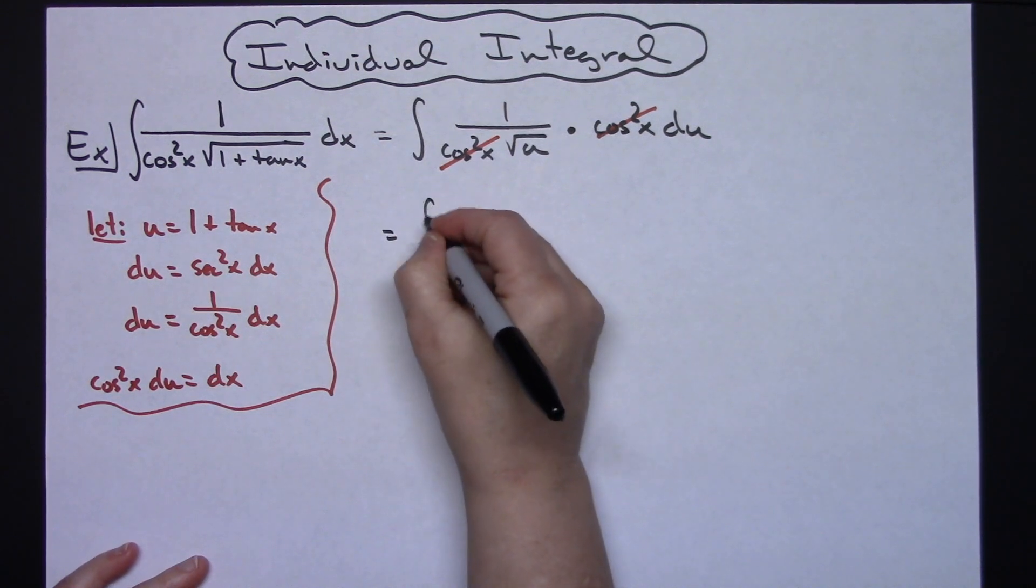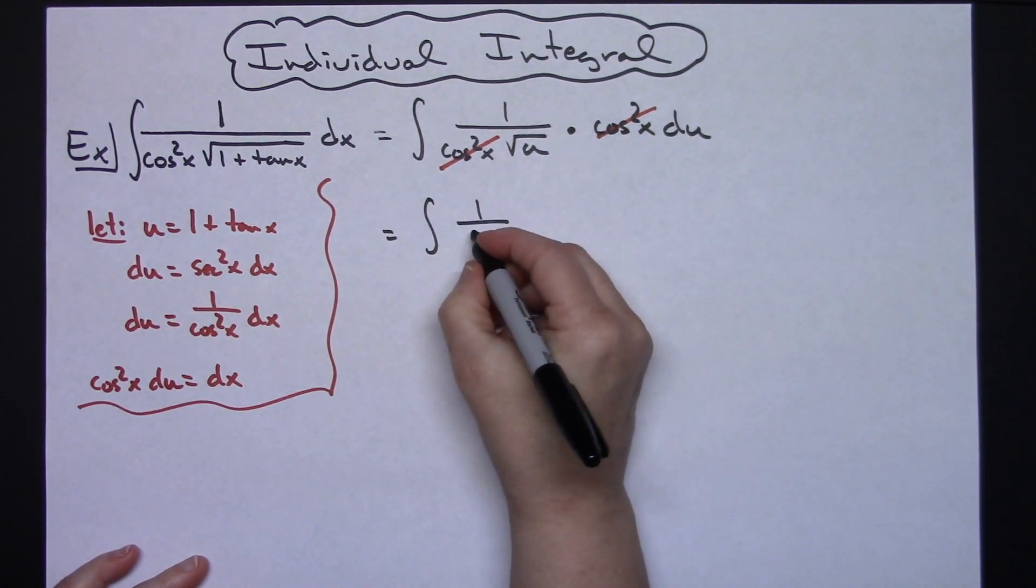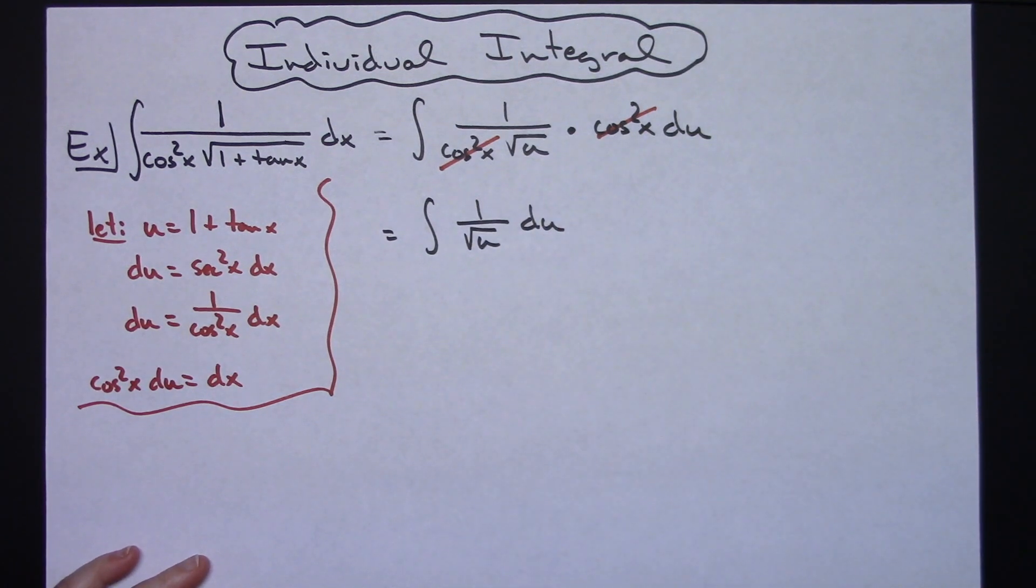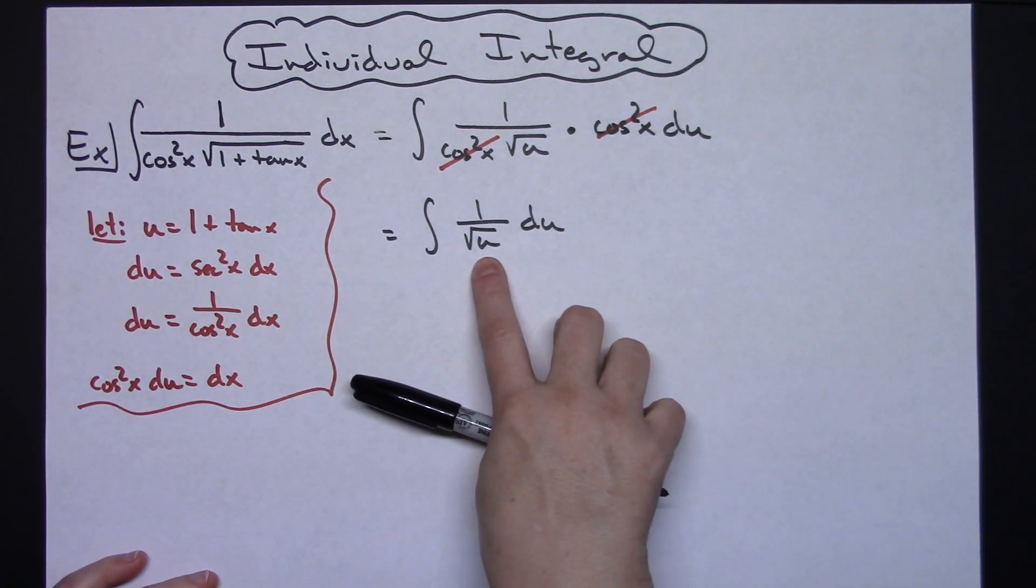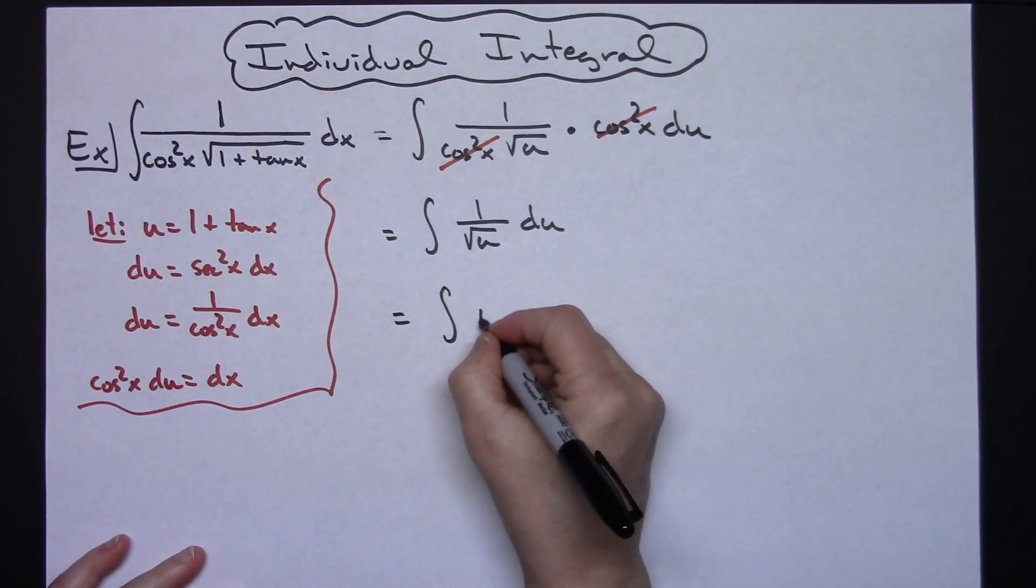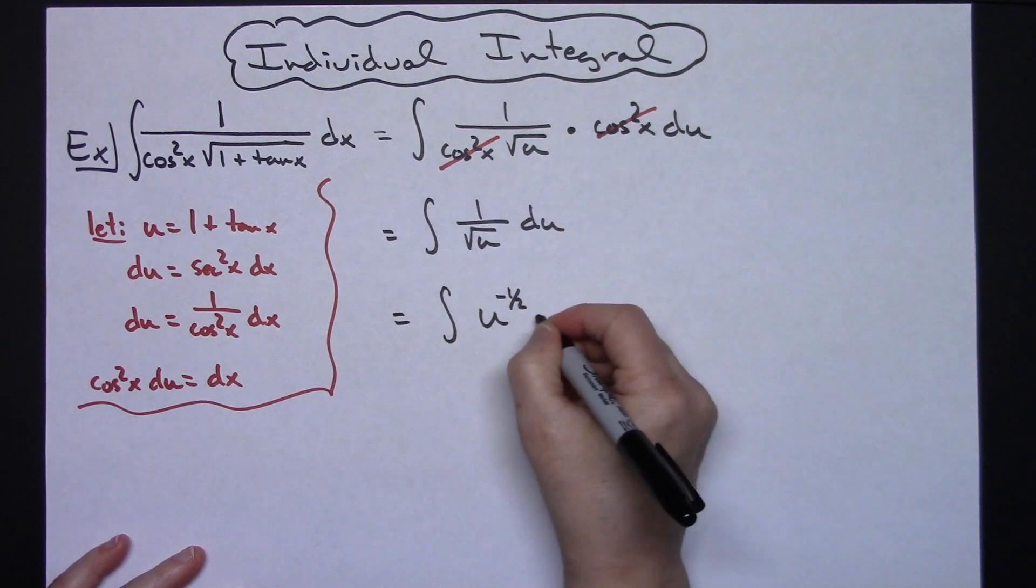Making that reciprocal identity substitution right there gives us something that can cross out. That's going to leave us with the integral of 1 over the square root of u du. This is something that now we can integrate. We'll turn this into u to the 1 half and move it to the top, make it negative, so square root of u to the negative 1 half du.